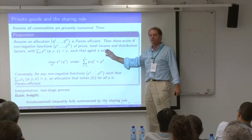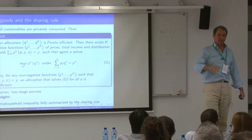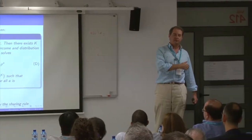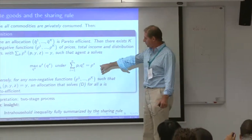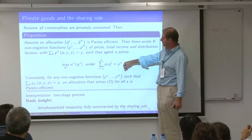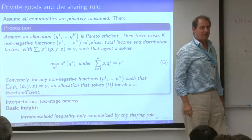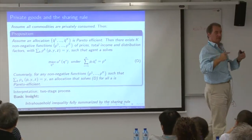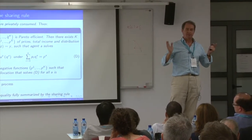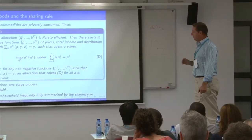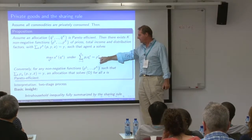Forget about efficiency — assume people make decisions in two stages. Stage one: there is money on the table, they split it. Something goes to the husband and whatever is left goes to the wife: rho_A to the wife, rho_B to the husband, and those quantities add up to total income. Stage two: with this money, they do whatever they want. This is equivalent to efficiency — it's called the second welfare theorem. In a world like this, assuming efficiency is equivalent to assuming the existence of a sharing rule.